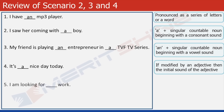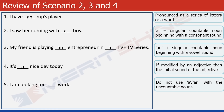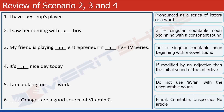Try this one: I am looking for dash work. This was tricky — work is an uncountable noun, so we will not have any article here. Now the final sentence: Dash oranges are a good source of vitamin C. This is the case of a plural countable and unspecific noun, and hence it would not take any article.